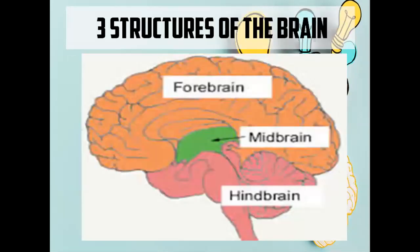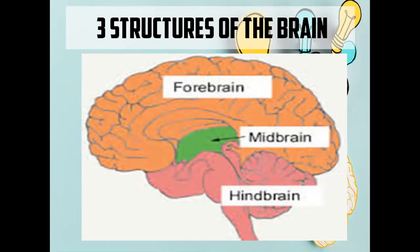We have the three main structures of the brain. The first one is the forebrain — that orange structure. We also have the midbrain, which is that green-colored structure, mid meaning middle. And the hindbrain, meaning behind, so it is at the back portion of our brain.